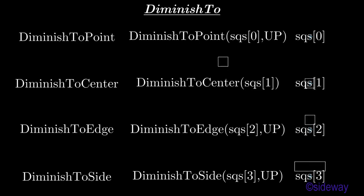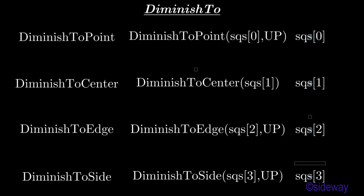DiminishToEdge method is used to diminish a mathematical object at a specified point on the edge animatedly. DiminishToSide method is used to diminish a mathematical object at a specified side on the edge animatedly.